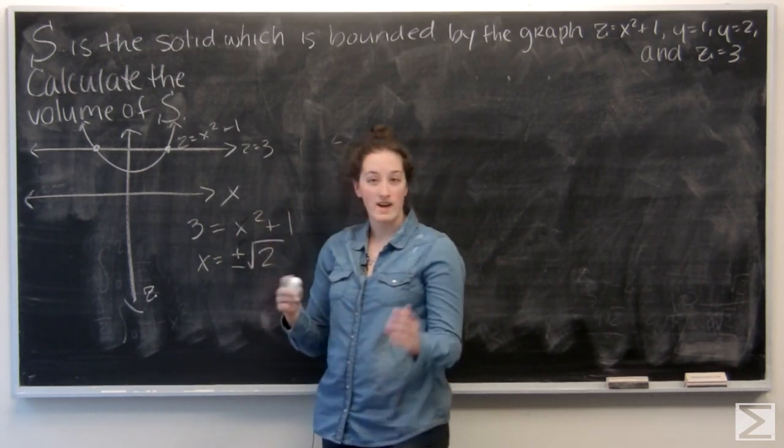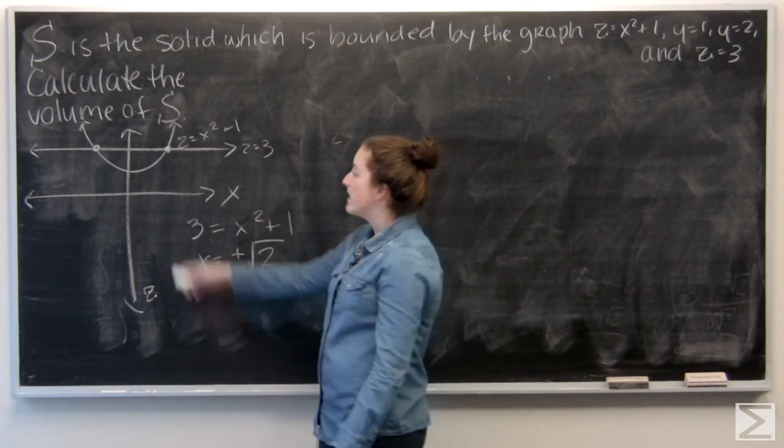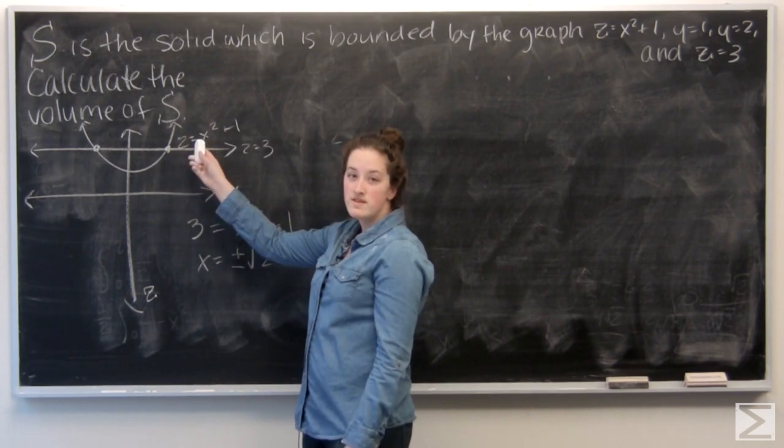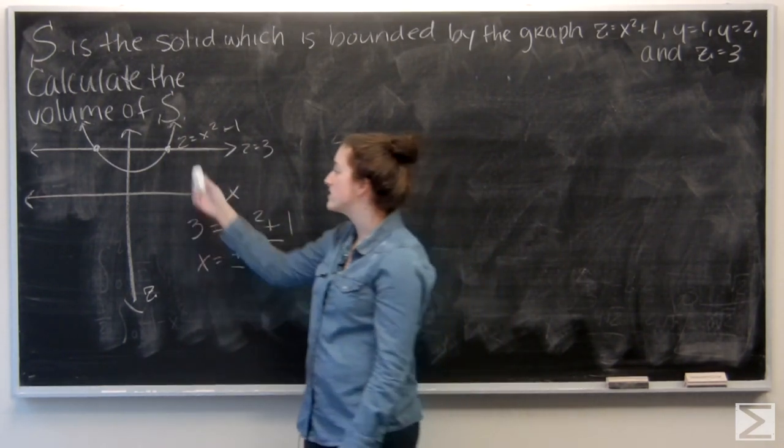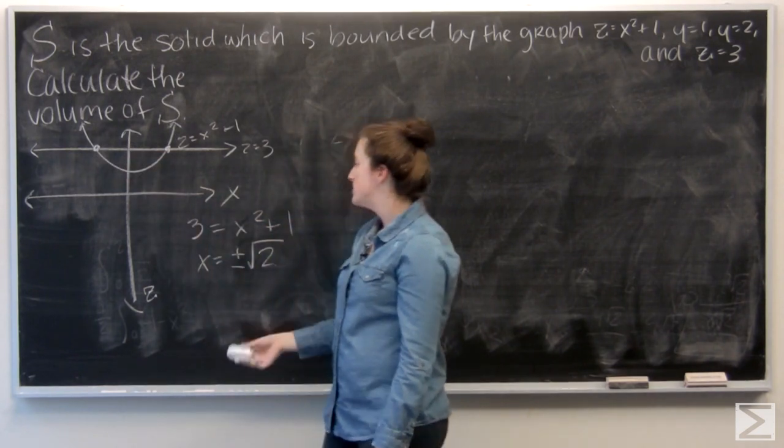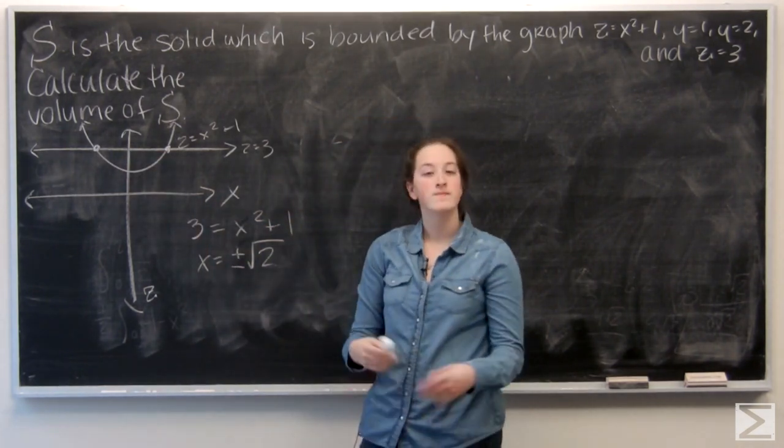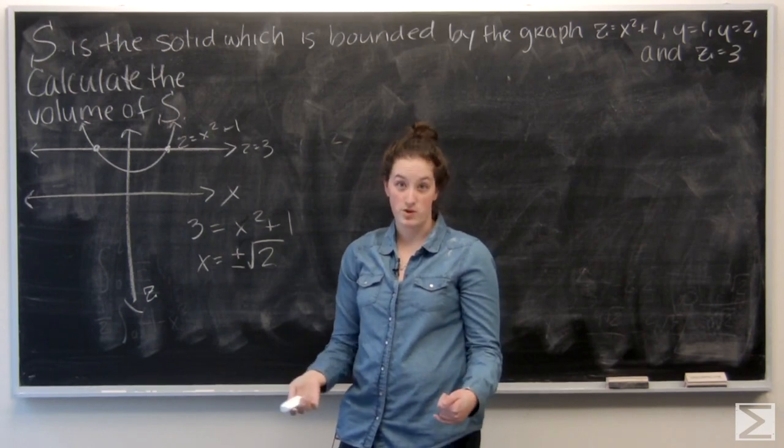I projected S into the xy plane. So I have z equals x squared plus 1 and z equals 3. Set those equal to each other, and I can get the x values of their points of intersection. So 3 equals x squared plus 1 got me x equals plus and minus root 2.